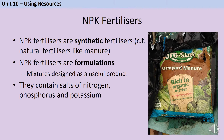NPK fertilisers are synthetic fertilisers, which means they've been manufactured from chemicals. That can be contrasted with natural fertilisers like manure, which is made from animal dung. NPK fertilisers are an example of a formulation — a mixture designed as a useful product where the amounts of different components have been carefully calibrated so they're always exactly the same. NPK fertilisers contain nitrogen, which is necessary for plants building proteins; phosphorus, which is necessary for making DNA and ATP (important in respiration); and potassium, which is important for plants opening and closing their stomata. The fertilisers are called NPK because those are the chemical symbols for nitrogen, phosphorus and potassium on the periodic table.